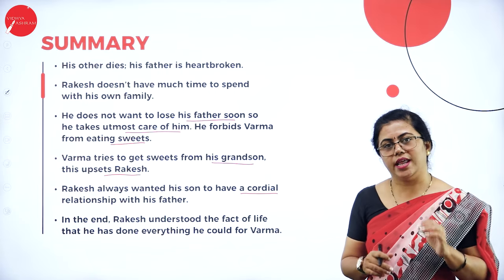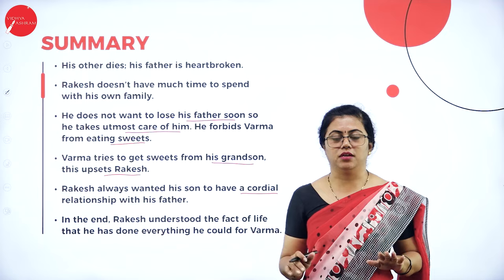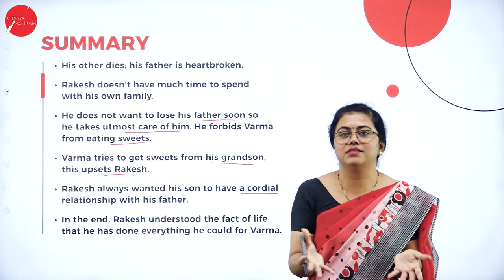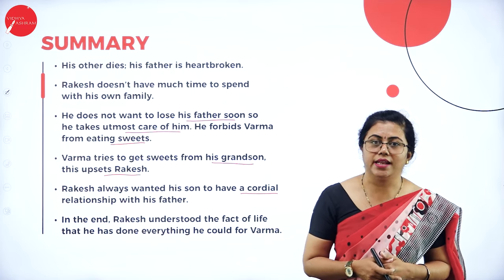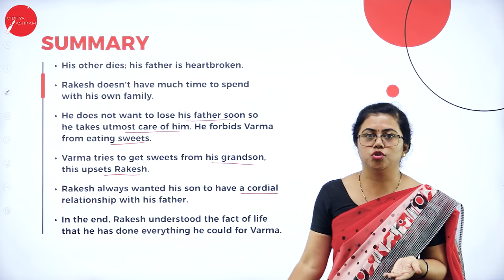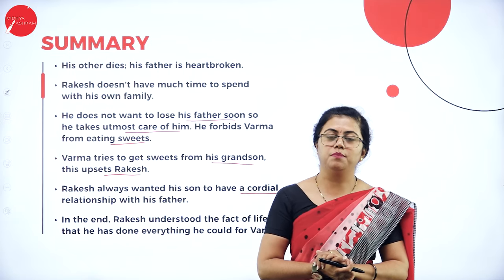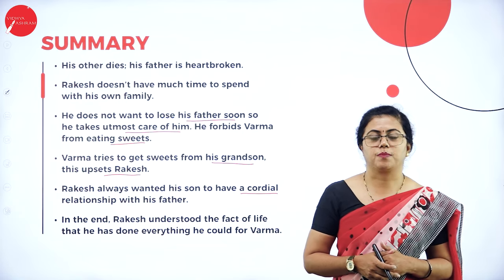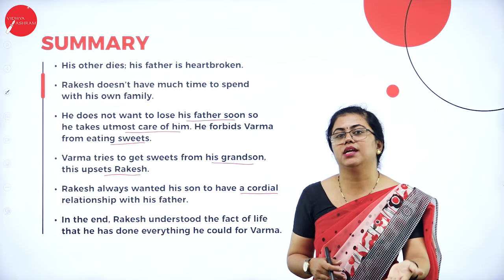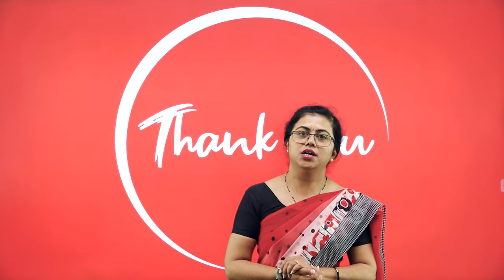Veena carefully took care of her father-in-law. In the end, Varma starts feeling that Rakesh has become a kind of dictator — a tyrant. But when Varma was about to die, Rakesh understood that whatever was possible from his end as a son, he had done for his father. He was satisfied with the duty he had carried out, and when he lost his father, he was not much disturbed because his devotion had been complete.